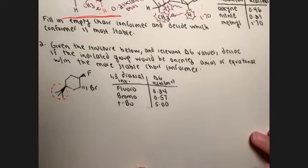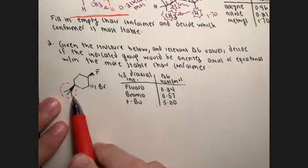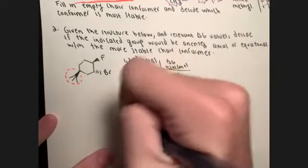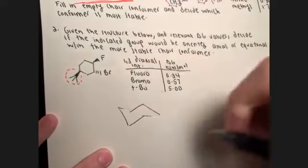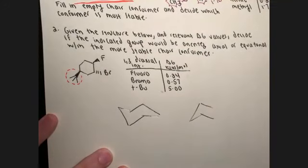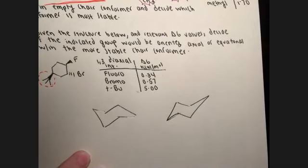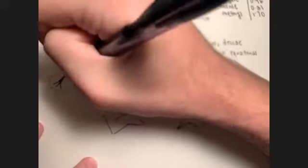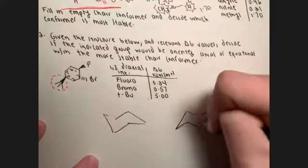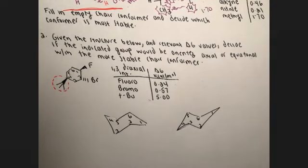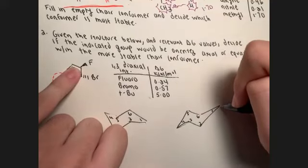For question two, we need to draw both chair conformers. Remember, we draw the first one and then label the carbons. Carbon one is pulled up and out of the plane, so if the stereochemistry is a wedge — which likes to be up — then the fluoro group on carbon one is axial.